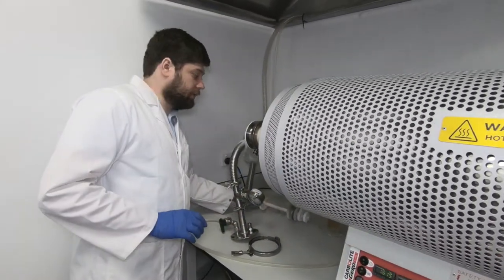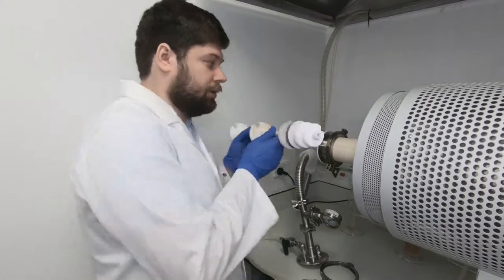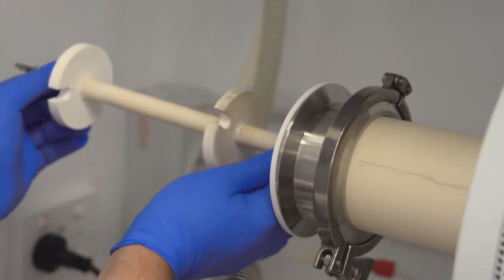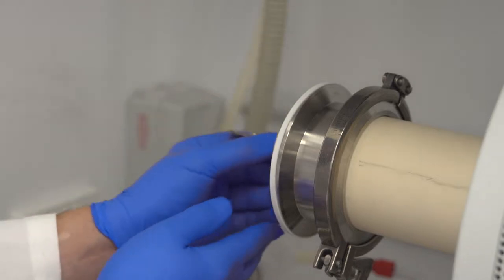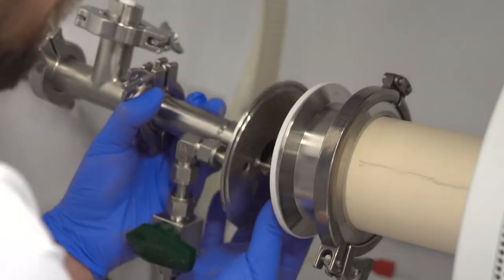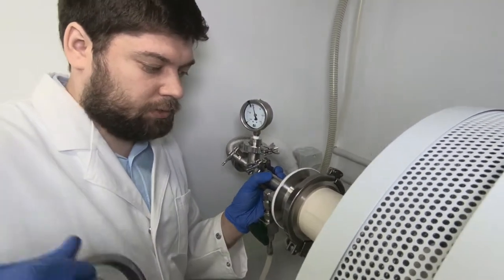Now our furnace is ready to be sealed. First of all, we use this thermoradiation shield. It's very important part because it prevents our end seals from overheating. We put it inside and then use this end seal and close this out.